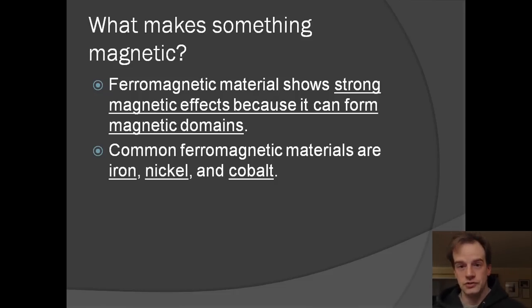Now ferromagnetic materials, like iron, nickel, and cobalt, have strong magnetic effects because they will form magnetic domains. And it's no mistake that if you find iron, nickel, and cobalt on the periodic table, guess what? Neighbors next to each other.